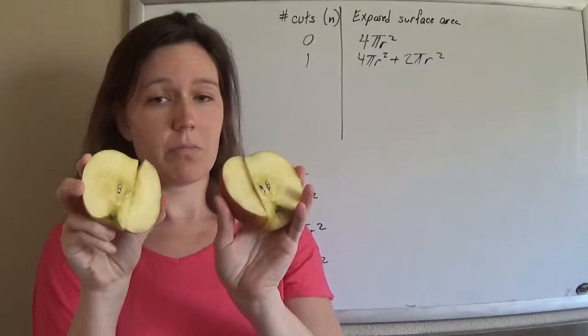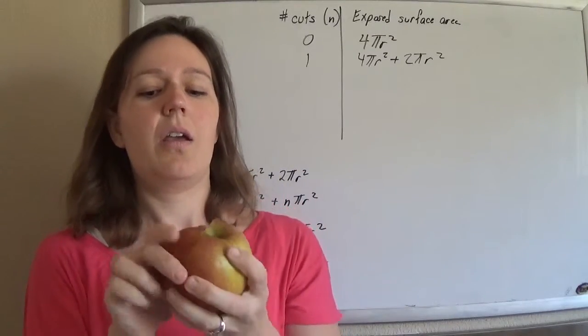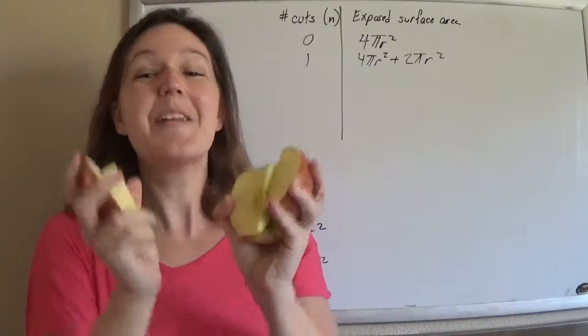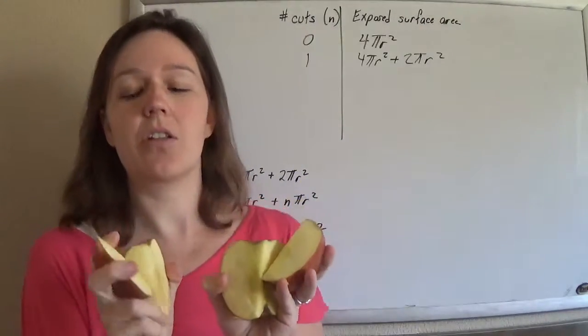You have those two extra circles. Cut it again. Then you've got what you had before, plus an extra, it's not working, plus an extra 2πr². So these are exposed and those are exposed.